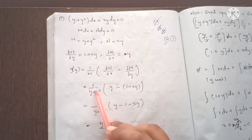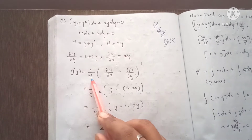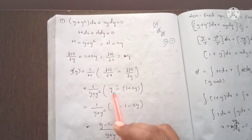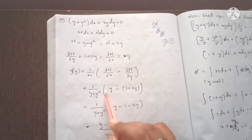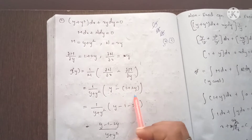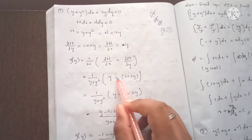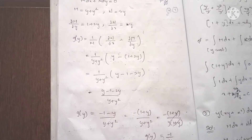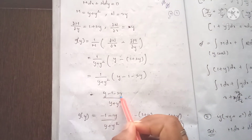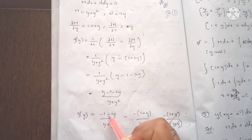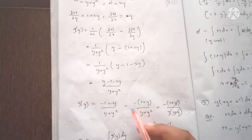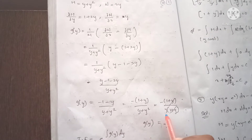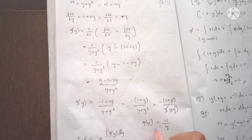Using the fifth method formula, we compute 1 by M into dou N by dou x minus dou M by dou y. Here M is y plus y squared. The value of dou M by dou y is 1 plus 2y, and dou N by dou x gives 1 minus 2y divided by y plus y squared. This simplifies to minus 1 plus y, and with y common in y into 1 plus y, we get g of y equals minus 1 by y.